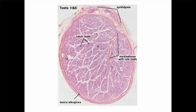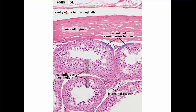The entire section of the testis also includes a part of the epididymis. You can see that it is covered outside by the tunica albuginea. The outer layer is tunica vaginalis, and towards the middle you can see the mediastinum with rete testis. All these are the different lobules with the seminiferous tubules inside.